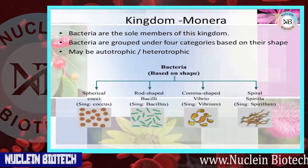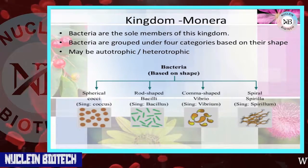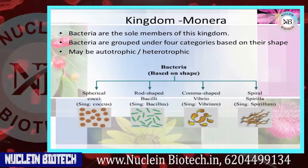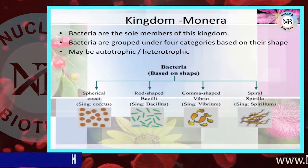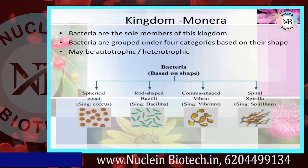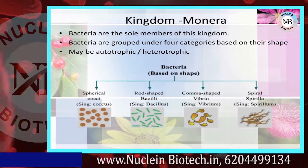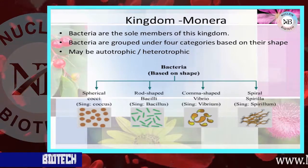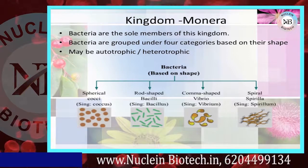Based on their shape, bacteria are classified into four categories: spherical, rod-shaped, comma-shaped, and spiral. Spherical shaped are coccus, rod-shaped are bacillus, comma-shaped are vibrio, and spiral shaped are spirillum.